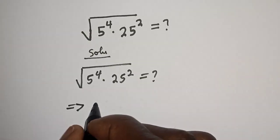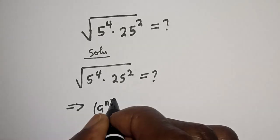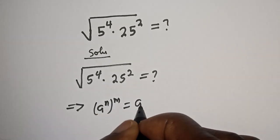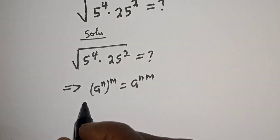Take note of this rule: if you have a raised to power n to the power of m, this is equal to a raised to power n times m.